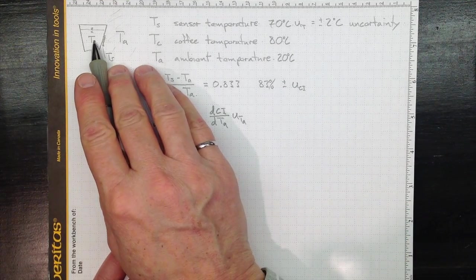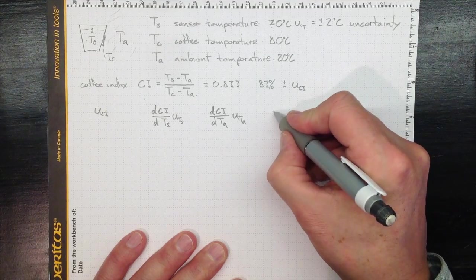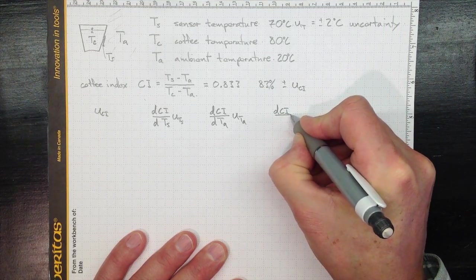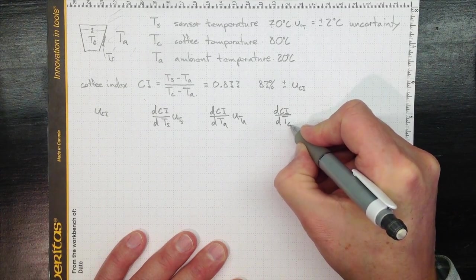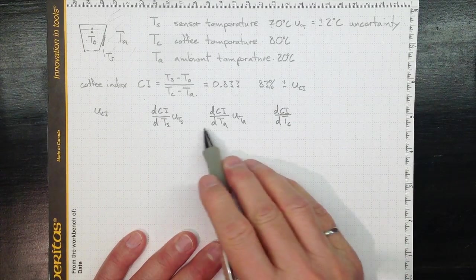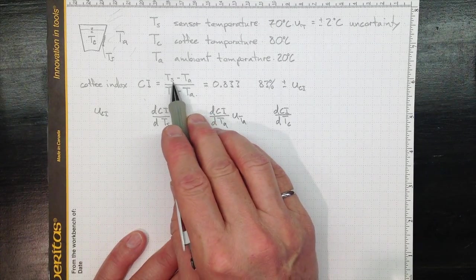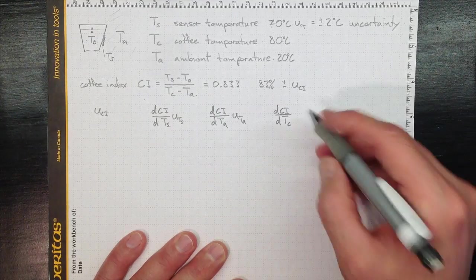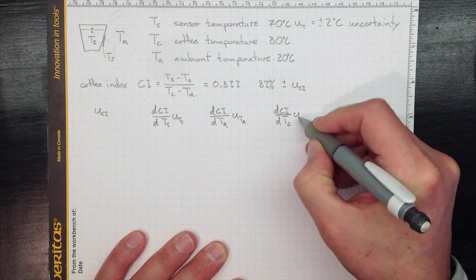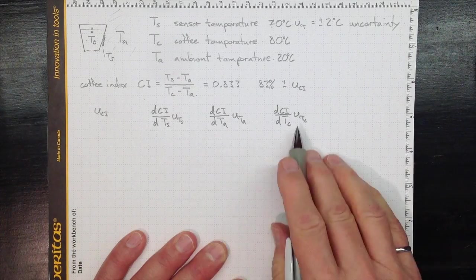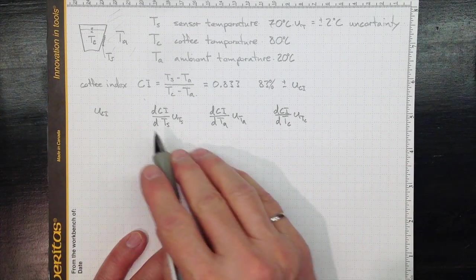Also, if I change the coffee temperature, my calculated CI will change a little bit with a little change in the coffee temperature. And these are all determined from the calculation from the formula which relates CI to TS, TA, and TC. So this one, if I have an uncertainty in my coffee temperature measurement, then I'll get an uncertainty in the CI overall.